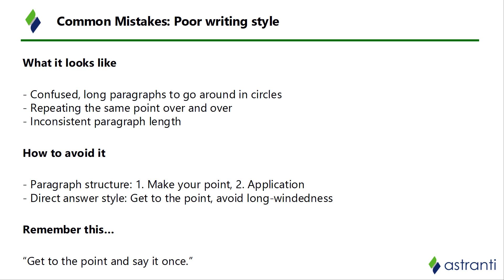Another obvious sign of a poor writing style is inconsistent paragraph length — some long rambling sentences, like we mentioned a moment ago, others that are little more than a sentence. This means you aren't consistently developing each point throughout your answer. You may be losing marks for not developing your answer enough where you've got short paragraphs, and you may be wasting time over-explaining something you've already got marks for with those long rambling paragraphs.